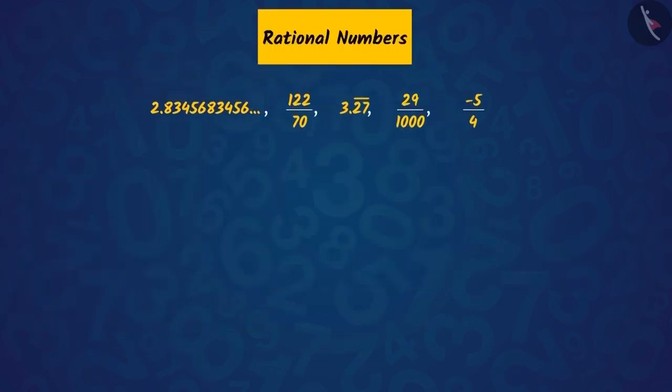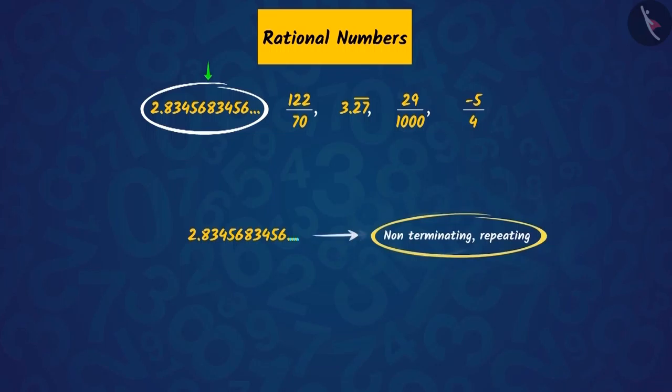Now, let's move to rational numbers. Moving forward, if we observe the decimal expansion of this number, we can see that these three points at the end of the number tell us that the decimal expansion is non-terminating, and the digits after the decimal 8, 3, 4, 5 and 6 are recurring. So, the decimal expansion of this real number will be non-terminating, repeating.